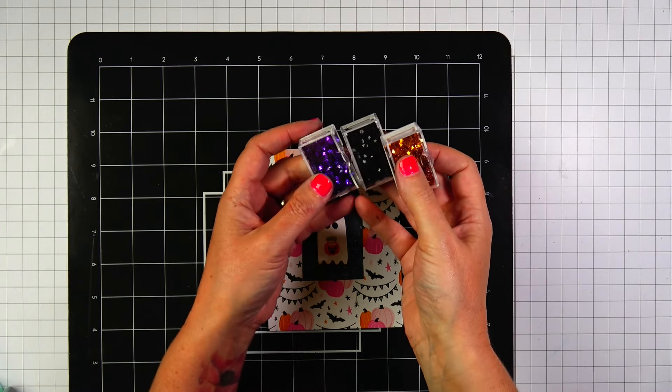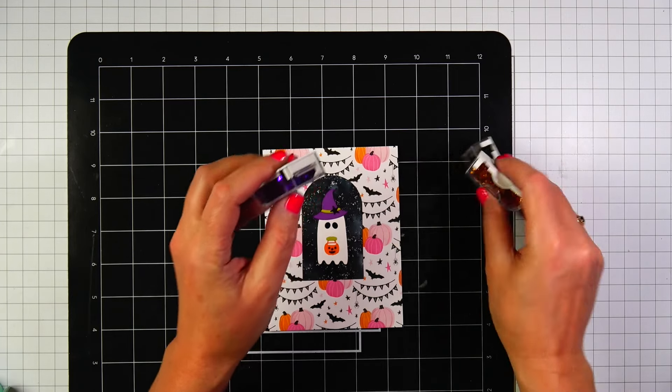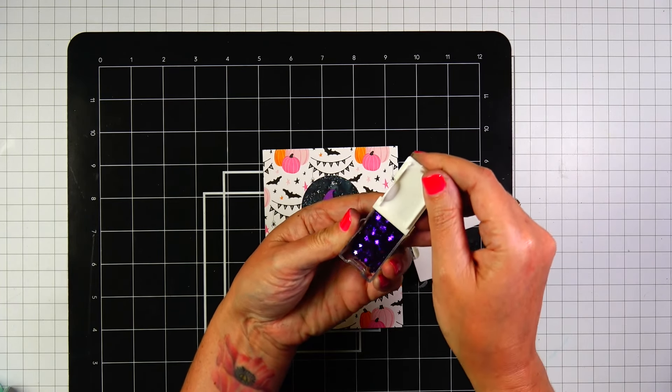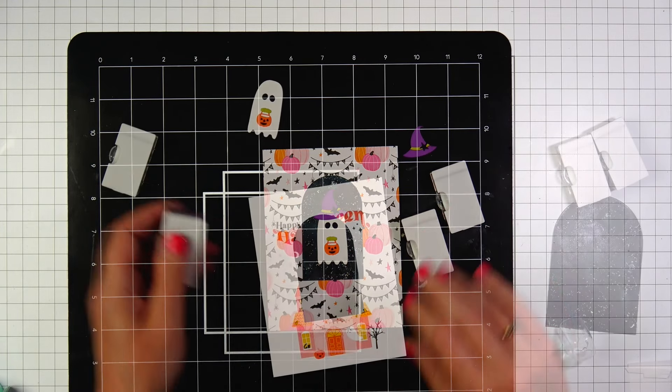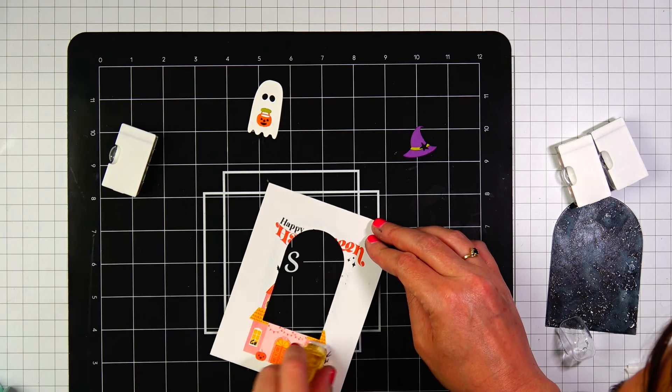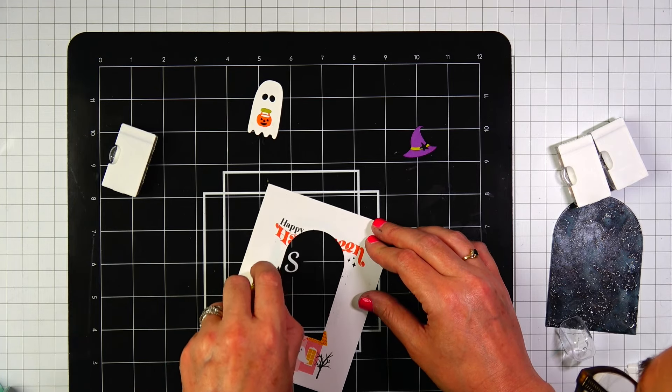I went through my stash of embellishments and I found these really shiny stars from Pretty Pink Posh. These are going to be the elements in the shaker window. If you have any fun Halloween themed embellishments, they would be perfect. This is just what I had in my stash.